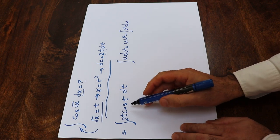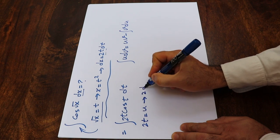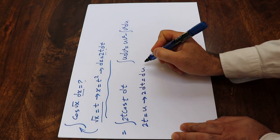So here, if you define 2t as u, therefore 2 dt will be equal to du.